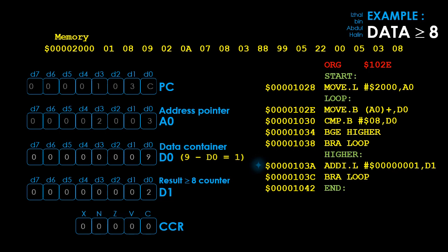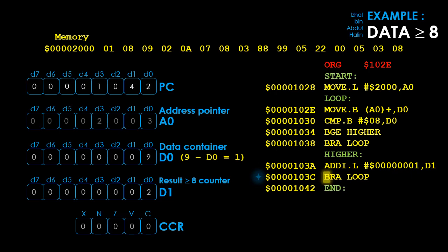The status register is updated to 00000 because the addition resulted in a positive non-zero number. The program counter is now pointing to address 103C. Before executing BRA loop at 103C, the program counter is updated to the next address 1042. Once this is done, the branch always instruction is executed, branching back to loop.